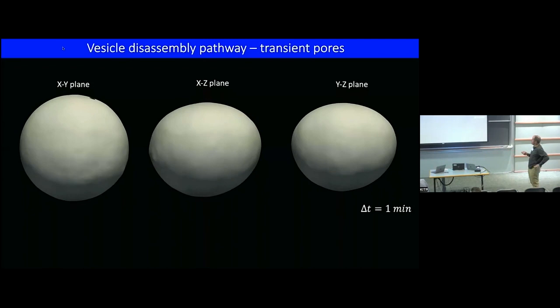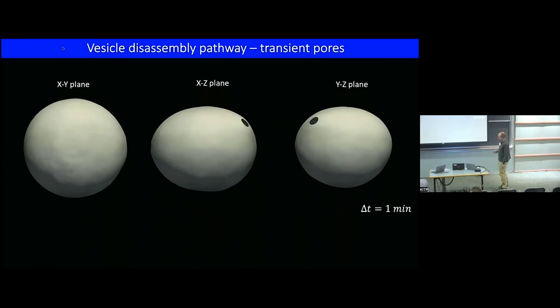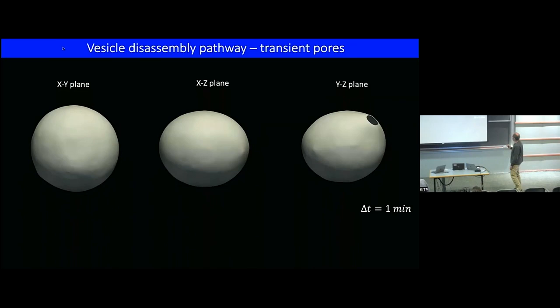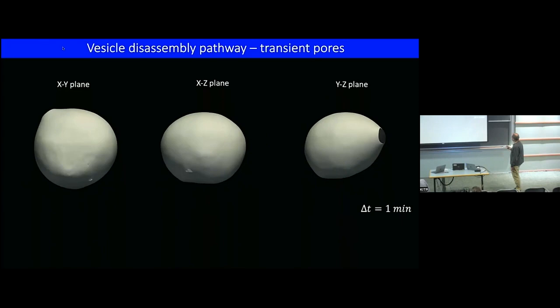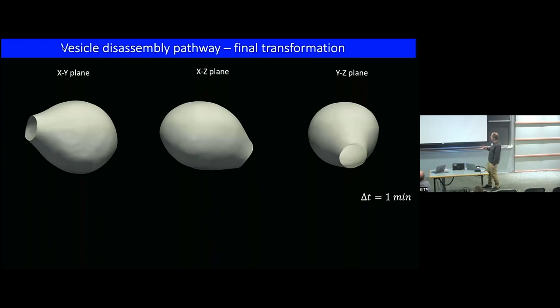This is a three-dimensional reconstruction of the vesicle — you can visualize it in 3D and see these pores continuously opening and closing. It's a fluid membrane: once you rupture it, it can self-heal. This continues for several hours as the vesicle gets smaller and smaller. Eventually you reach a regime where the vesicle is so small that the pore cannot close itself anymore, and you create a stable semi-bulbous shape. This is a metastable structure — it has an opening, and wants to transition into a flat sheet.